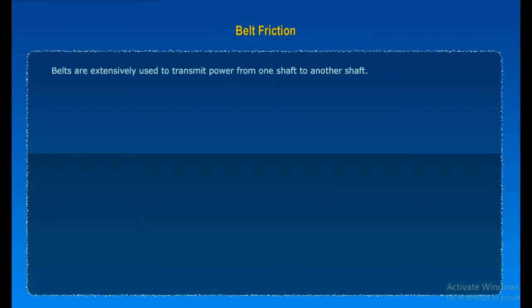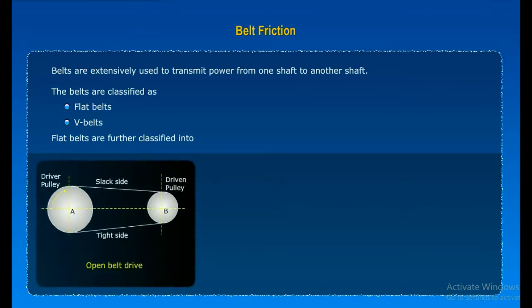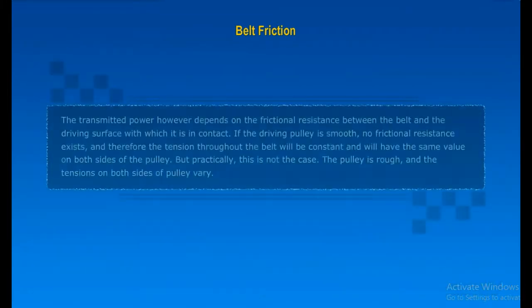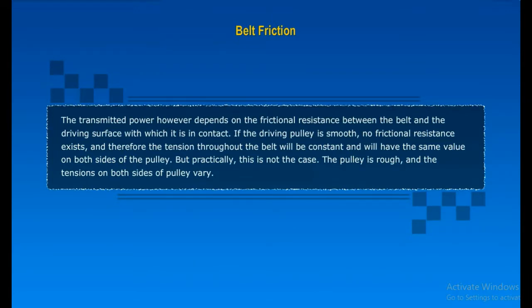Belt friction. Belts are extensively used to transmit power from one shaft to another shaft. The belts are classified as flat belts. Flat belts are classified into open belt drive, crossed belt drive, and compound belt drive. The transmitted power, however, depends on the frictional resistance between the belt and the driving surface with which it is in contact. If the driving pulley is smooth, no frictional resistance exists and therefore the tension throughout the belt will be constant and will have the same value on both sides of the pulley. But practically, this is not the case. The pulley is rough and the tensions on both sides of the pulley vary.